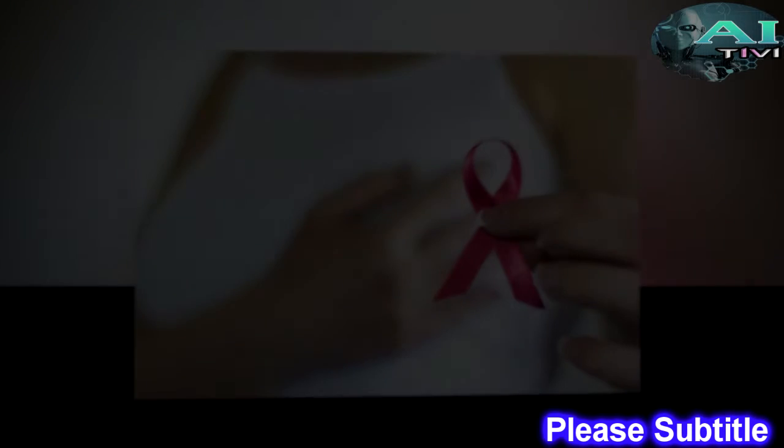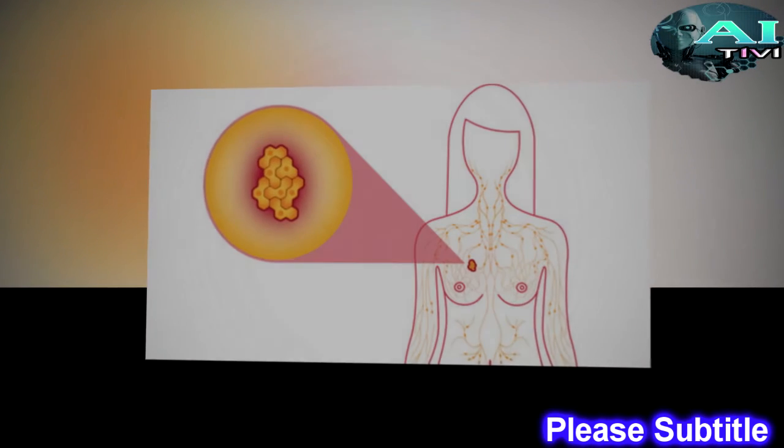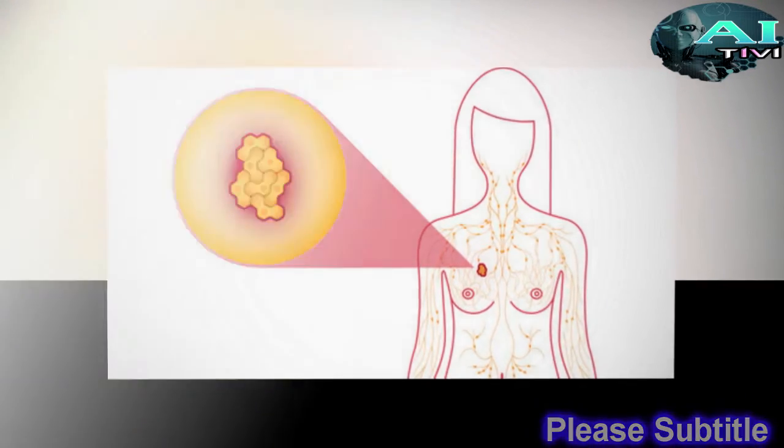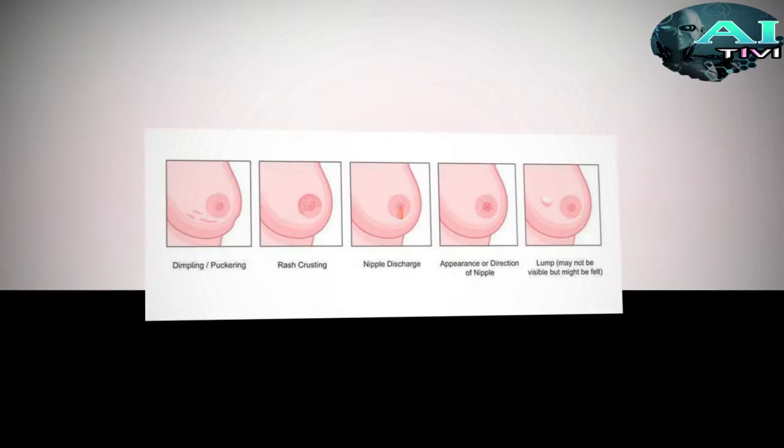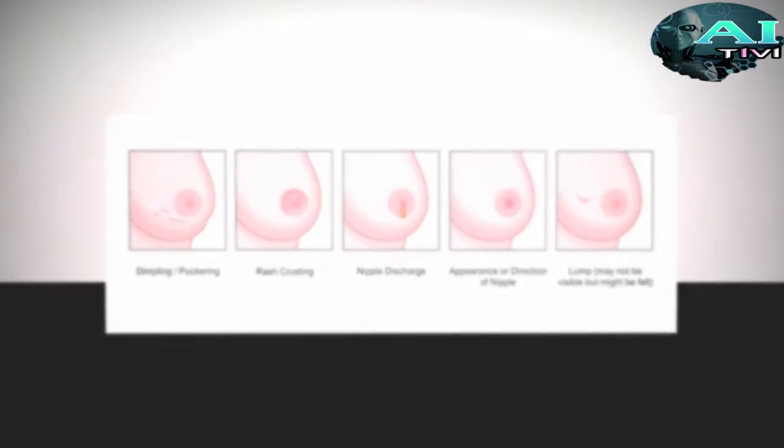Breast Cancer Linked to Bacterial Imbalances. Study Compares Bacterial Composition in Healthy vs Cancerous Breast Tissue. Date: October 6, 2017. Source: Cleveland Clinic. Summary: Researchers have uncovered differences in the bacterial composition of breast tissue of healthy women versus women with breast cancer.